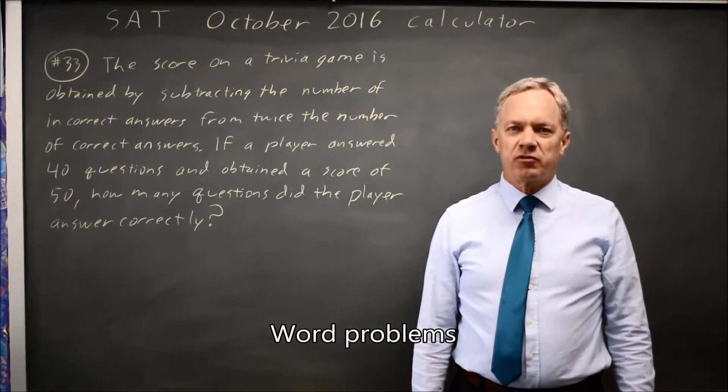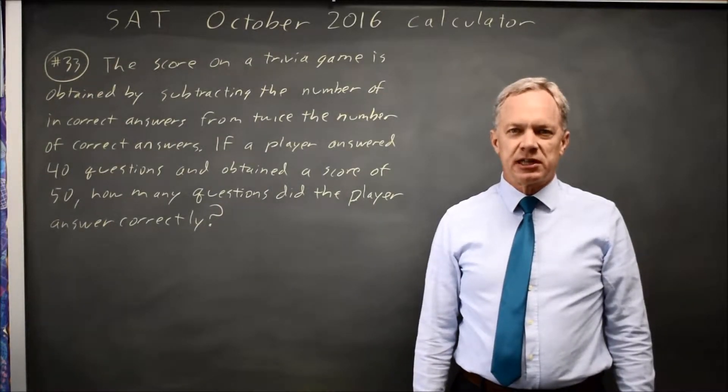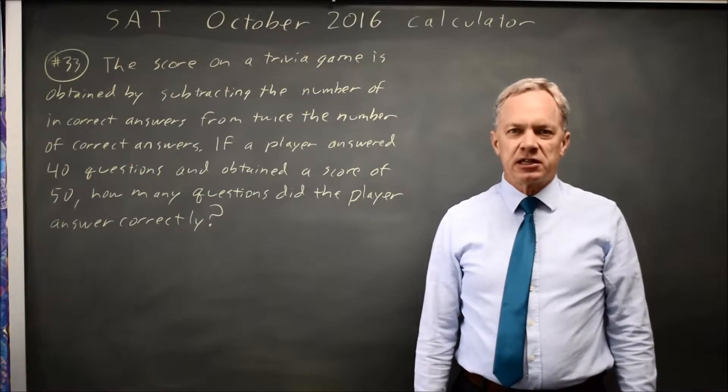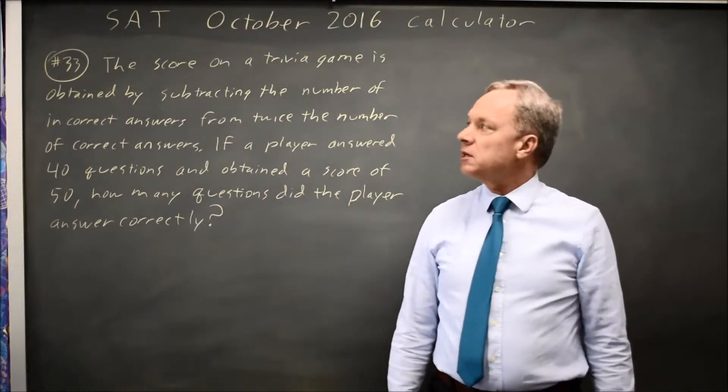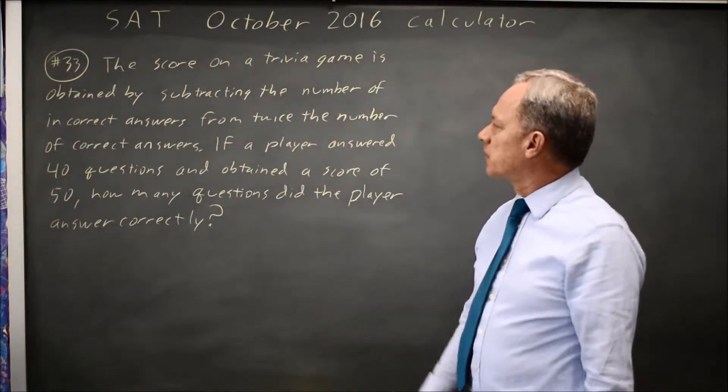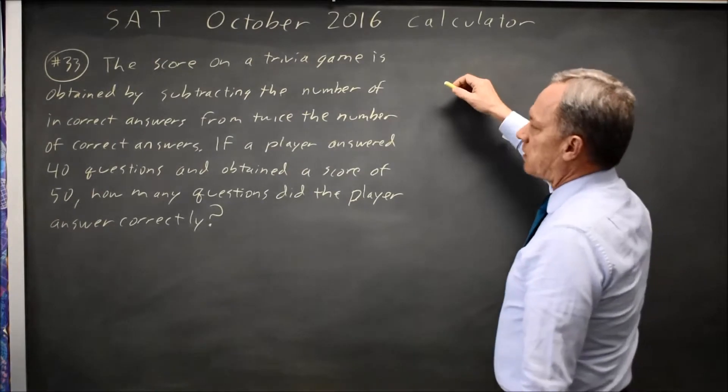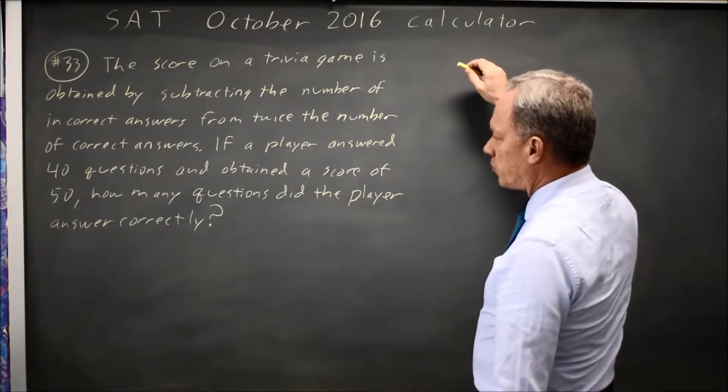This is Calculator Question Number 33 from the March 2016 SAT, which is also Practice Test 7 in the 2018 version of the College Board Prep Book. They give us a word problem describing points on a game, and we're told there's a total of 40 questions.